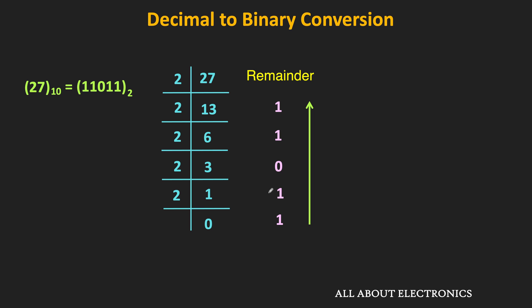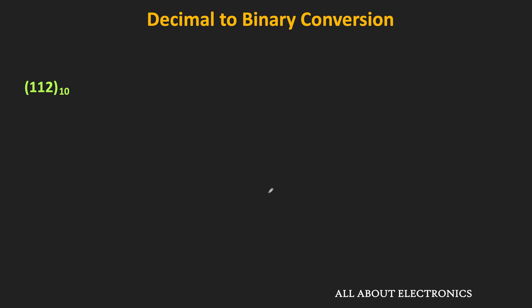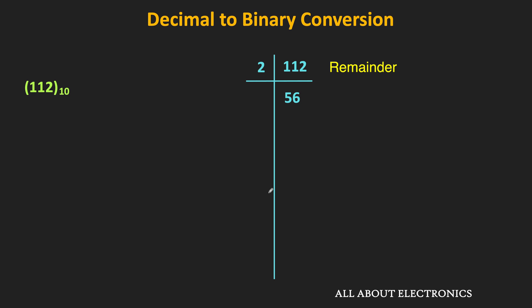In this way, we can convert any decimal number into the binary equivalent. Let us take one more example. Let us find the binary equivalent of the decimal number 112. Let's start dividing 112 by the factor of 2. Dividing 112 by 2 gives a quotient of 56, and in this case the remainder is equal to 0 — that is our LSB.